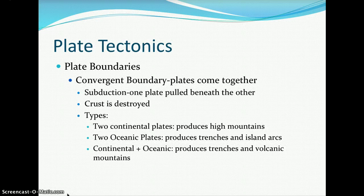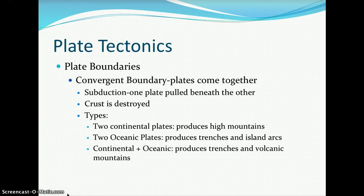There are three types of interactions at convergent plate boundaries. The first is two continental plates coming together, producing high mountain ranges — continental-continental. The second is two oceanic plates, where one subducts beneath the other, producing trenches and island arcs. The third is continental crust converging with oceanic crust, producing trenches and volcanic mountain ranges.